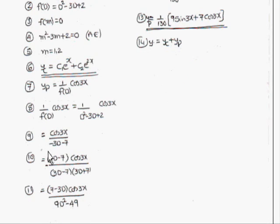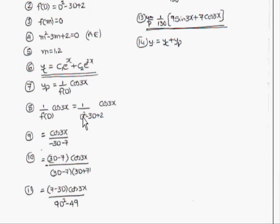Now we find the particular integral: yp = 1/f(D) · cos3x = 1/(D² - 3D + 2) · cos3x. Here b = 3, so b² = 9 and -b² = -9. Replace D² with -b², that is -9, in the denominator: (-9 - 3D + 2) = (-3D - 7). So we get cos3x / (-3D - 7).